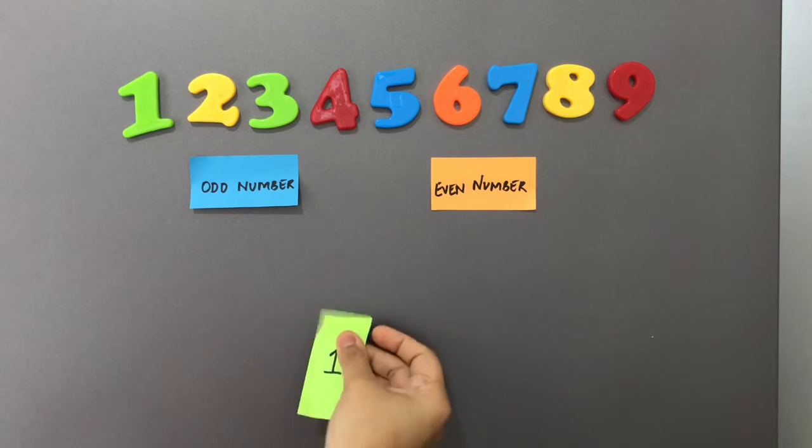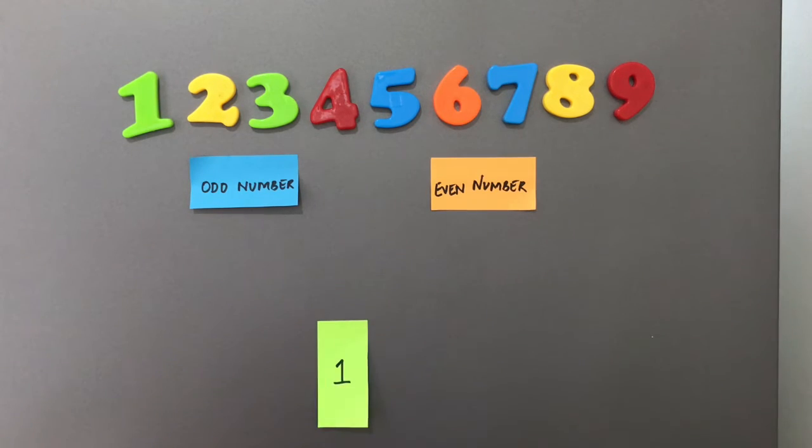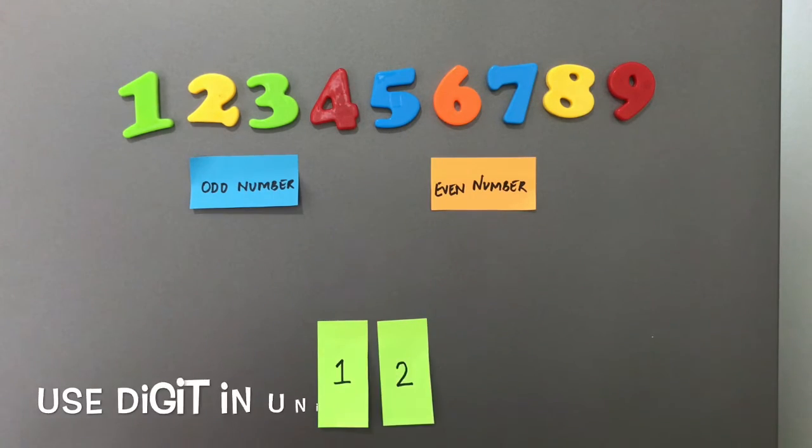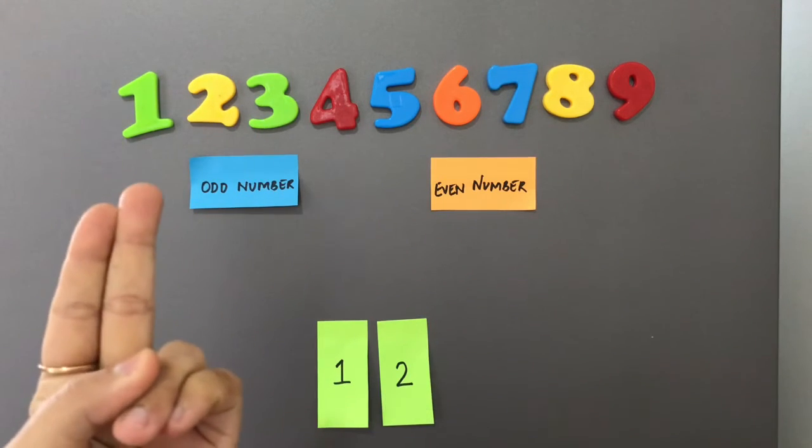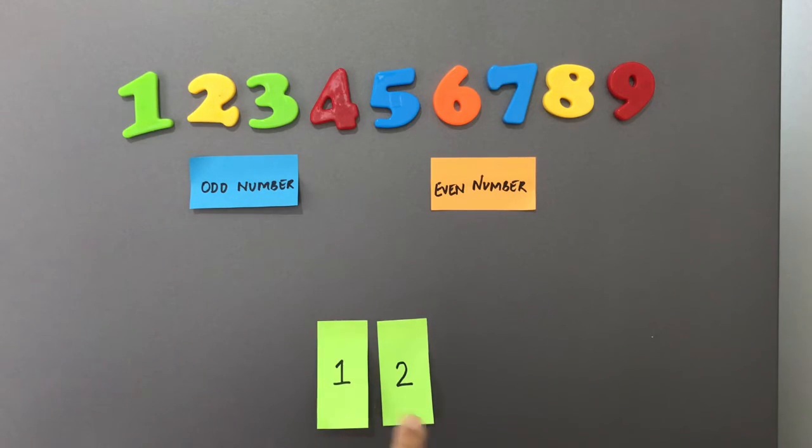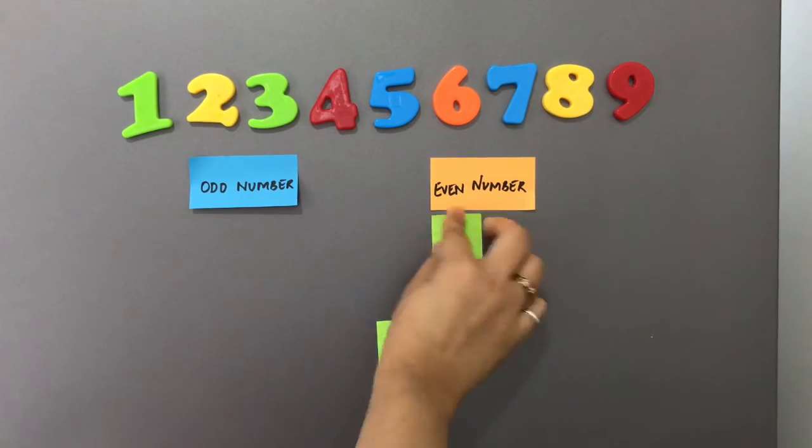So if I have a number twelve, I am going to look at the units place. The units place is number two. Take out those many fingers. Find a pair. So number twelve is an even number.